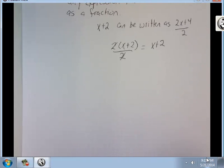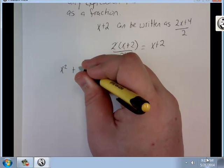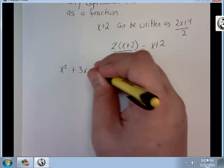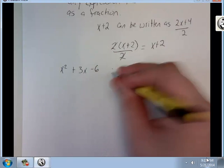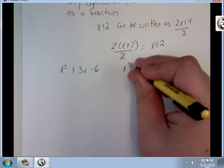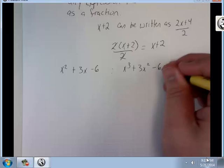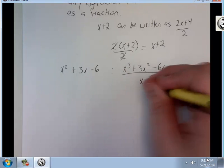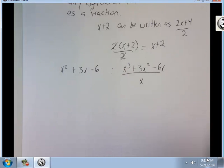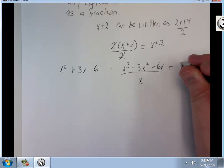Even something like x squared plus 3x minus 6 I can rewrite as x cubed plus 3x squared minus 6x over x, because I can factor out an x at the top and then these cancel.